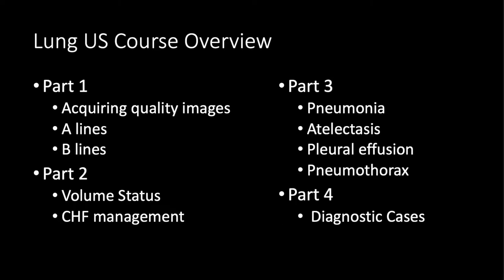We've already covered A-lines and B-lines and applying those concepts to volume status and CHF management in Parts 1 and 2. But ultrasound can be used for a lot of other lung pathology as well, such as pneumonia, atelectasis, pleural effusion, and pneumothorax. Ultrasound is very good at identifying these four conditions, though they come up less commonly in my day-to-day practice as a hospitalist. That's why I really want to start with A and B-lines and volume status management before getting into these parts.